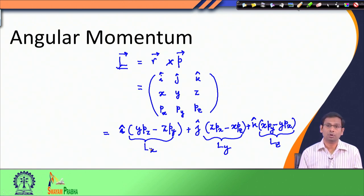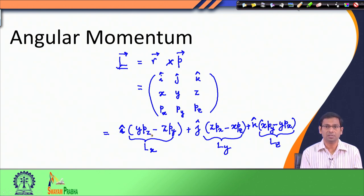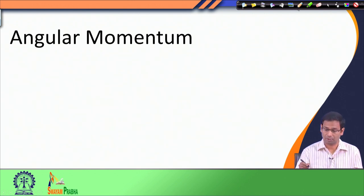We know that in quantum mechanics, for every classical observable there exists a quantum mechanical operator. Since we have already defined the classical expression for angular momentum, we can now define the quantum mechanical operator corresponding to it. When we write down the operator for Lx, Ly, or Lz, we use the position operators x, y, z and the linear momentum operators px, py, pz, whose functional forms and operations we already know.